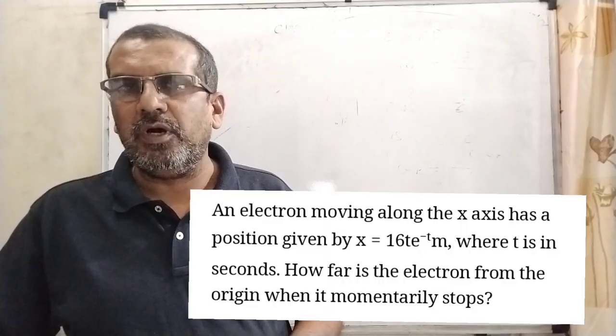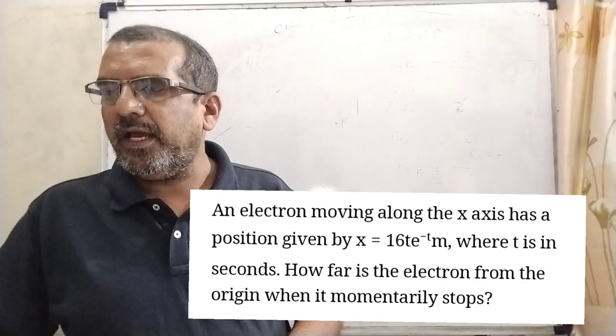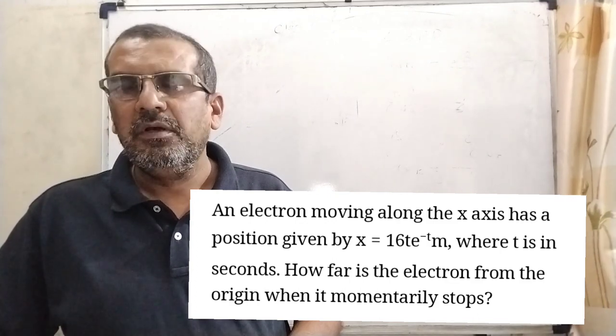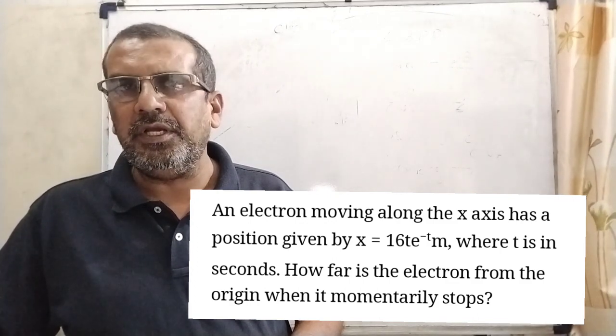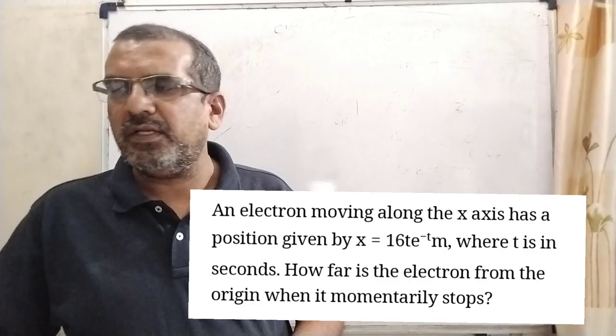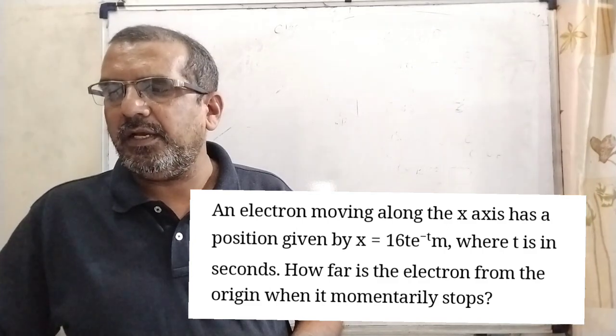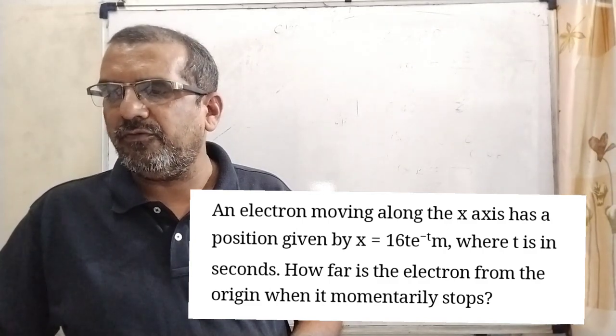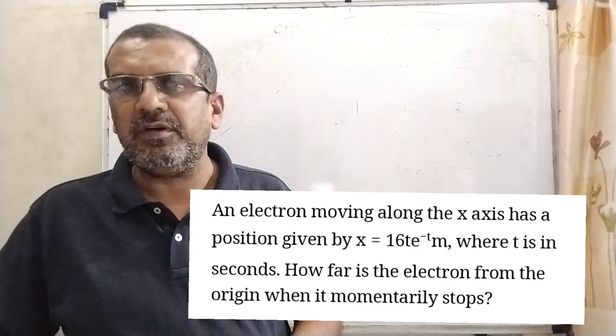Now here is the question. An electron moving along the x-axis has a position given by x = 16t·e^(-t) meters, where t is in seconds. How far is the electron from the origin when it momentarily stops?